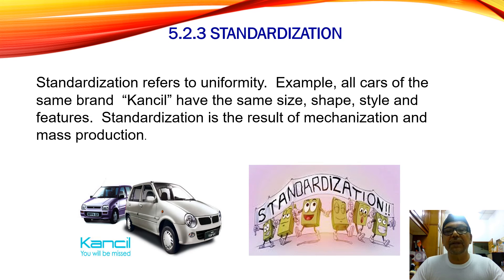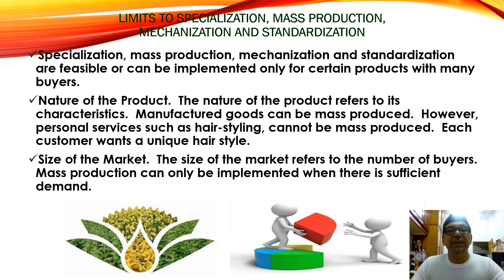Standardization refers to uniformity. For example, all cars of the same brand are made to the same size, shape, style and features. Standardization is the result of mechanization and mass production. When the machine produces a car, it will meet the standard specification and standard features because machines produce precisely according to what is programmed, whereas humans may not do it to the same standard — the standard may vary because humans can make errors, whereas machines are more precise. So specialization, mass production, mechanization and standardization are feasible or can be implemented only for certain products with many buyers.